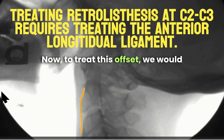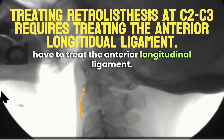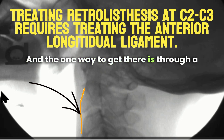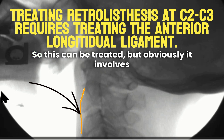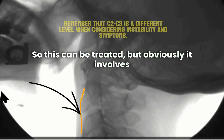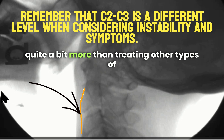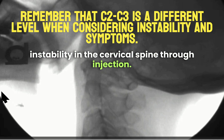To treat this offset, we would have to treat the anterior longitudinal ligament, and the only way to get there is through a PICL approach from the front, through the posterior oropharynx. So this can be treated, but it obviously involves quite a bit more than treating other types of instability in the cervical spine through injection.